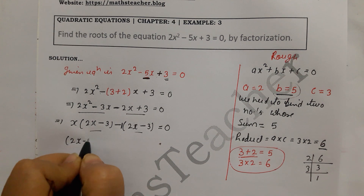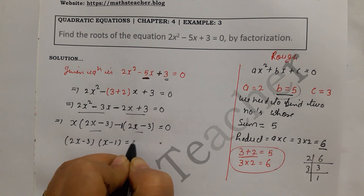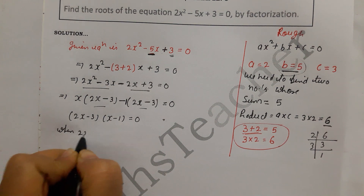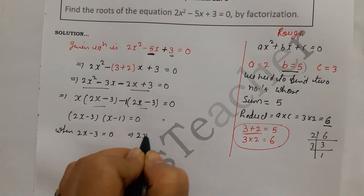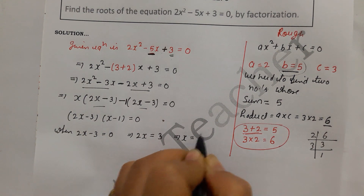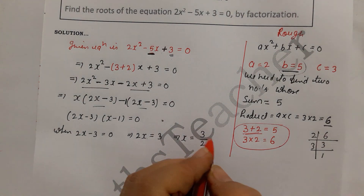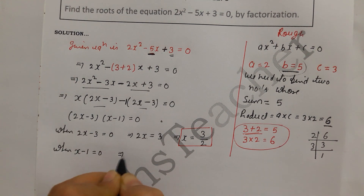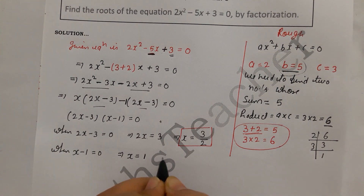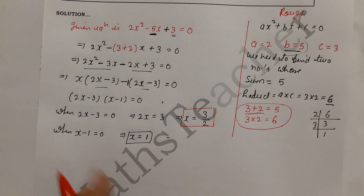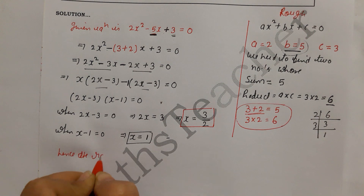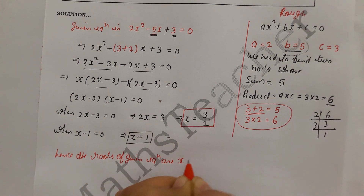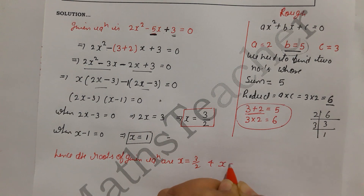Since the product is zero, each factor equals zero. When 2x minus 3 equal to 0, this implies x equal to 3 by 2. When x minus 1 equal to 0, this implies x equal to 1. Hence the roots of the given equation are x equal to 3 by 2 and x equal to 1.